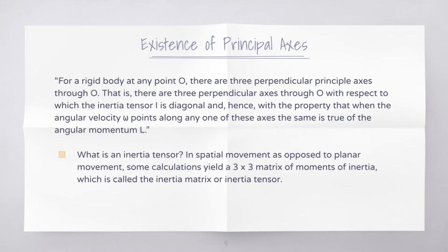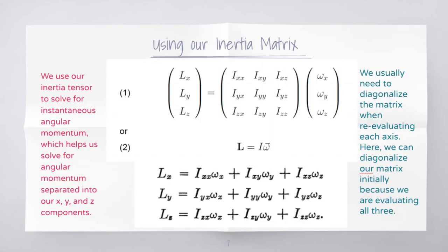With the property that the angular velocity omega points along any one of these axes, the same is true of the angular momentum L. There's a lot of information in this statement. An inertia tensor is a 3×3 matrix of the moments of inertia. We use our inertia tensor to solve for instantaneous angular momentum, which helps us solve for angular momentum separated into our different components.